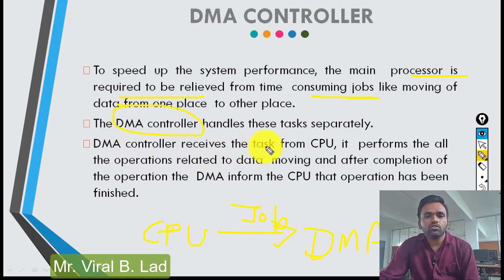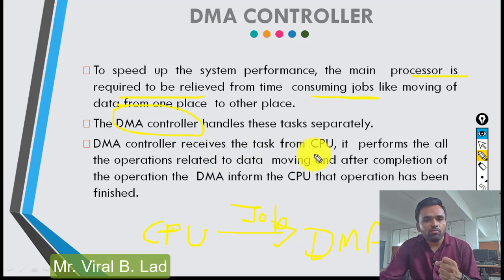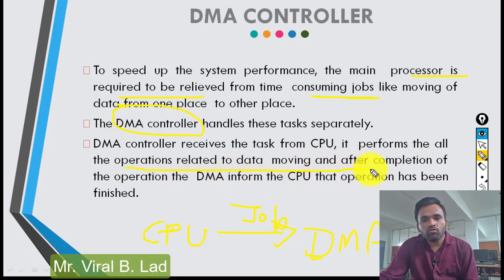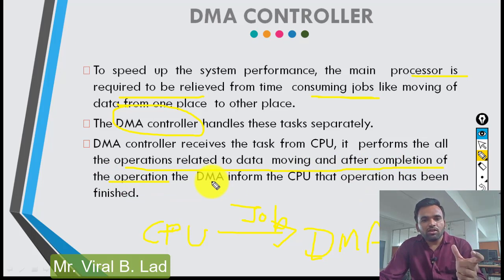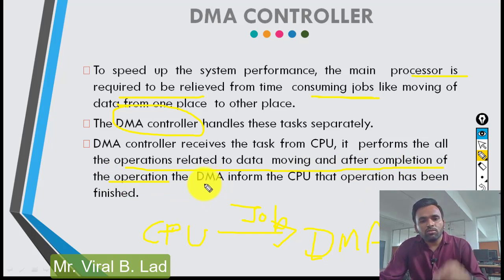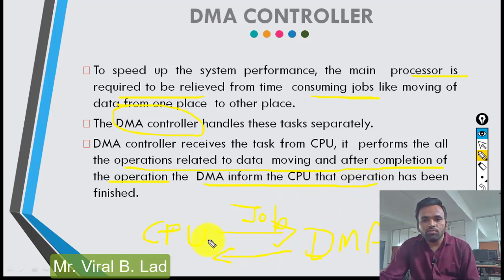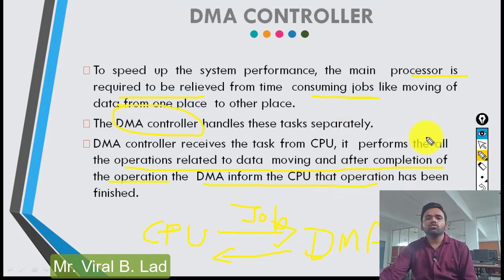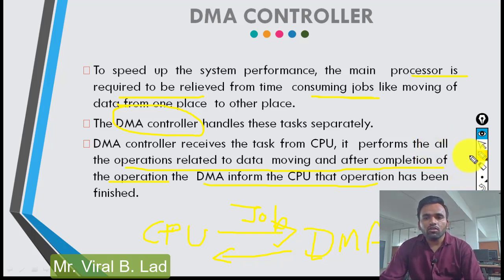The DMA controller receives a task from the CPU. It handles all operations related to data moving. After completion of the operation, the DMA controller informs the CPU that the data move is finished. So the DMA controller is used to handle data moving operations.